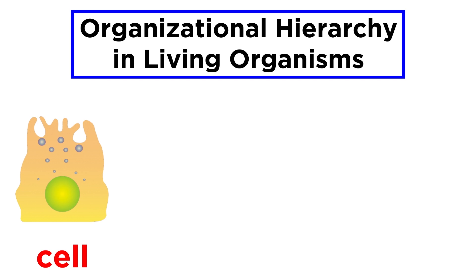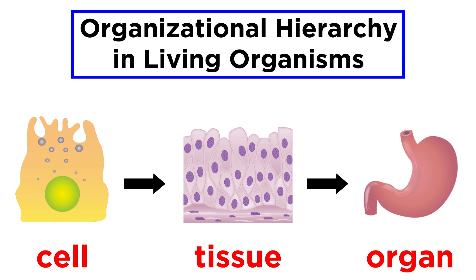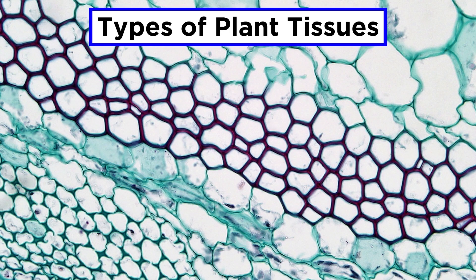Cells are the building blocks of life, but cells are usually organized into tissues, and these tissues will often be organized into organs, and this is true of plants just as it is for animals. Plants have three main types of tissues, and all of these tissues are comprised of the plant cells we discussed in the previous tutorial, so let's go through these types of tissue now.